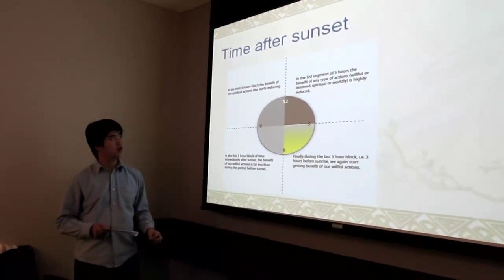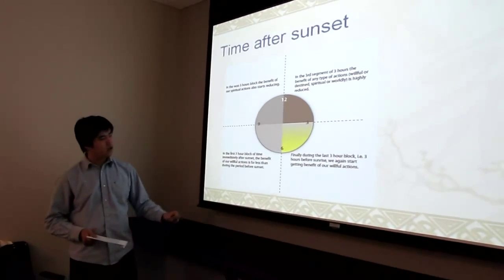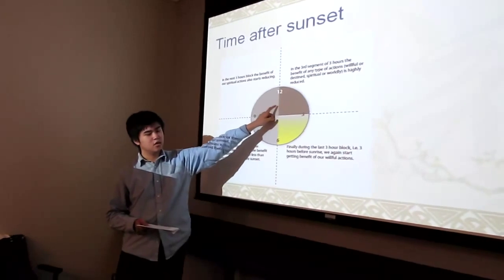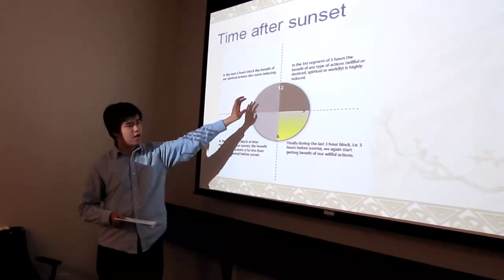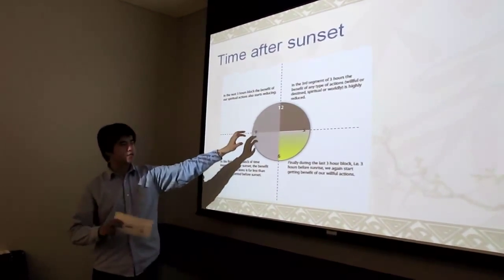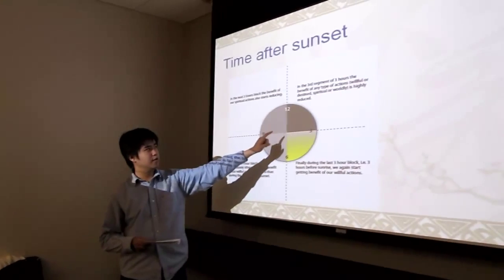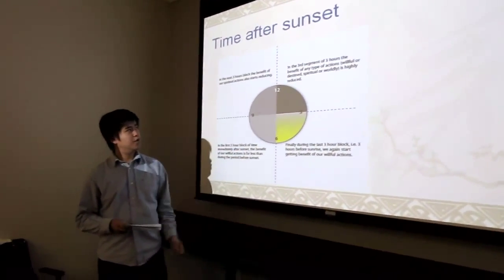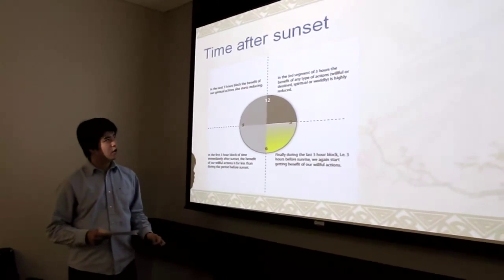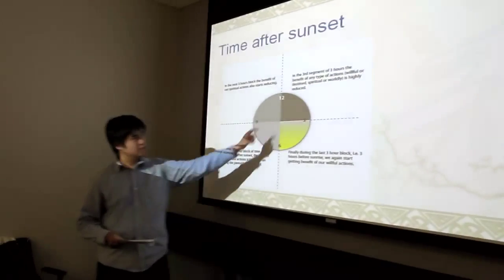In the next three-hour block, the benefit of our spiritual actions also starts to reduce. That means at 9 p.m. to midnight, your action rate will reduce, and you also have less high activity. And in the third segment of the three-hour block, benefit of any types of action, whether willful or spiritual, is highly reduced. That means in this part, you almost cannot work at high activity.